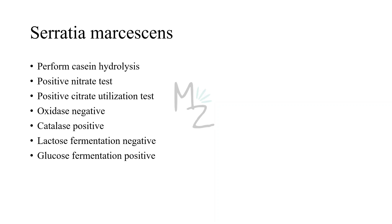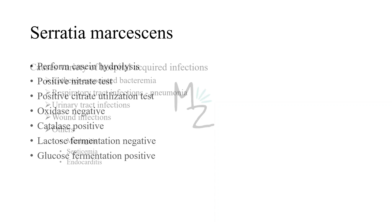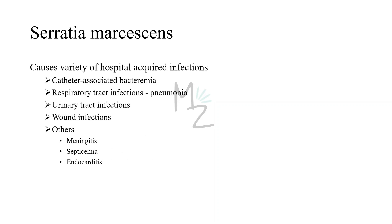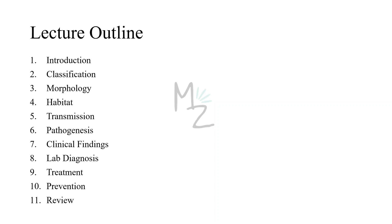Serratia marcescens does not ferment lactose, so lactose fermentation is negative, but it does ferment glucose, so glucose fermentation is positive. It causes a variety of hospital-acquired infections including catheter-associated bacteremia, respiratory tract infections such as pneumonia, urinary tract infections, wound infections, and certain other infections like meningitis — inflammation of the three protective layers of the brain and spinal cord — septicemia, and endocarditis.